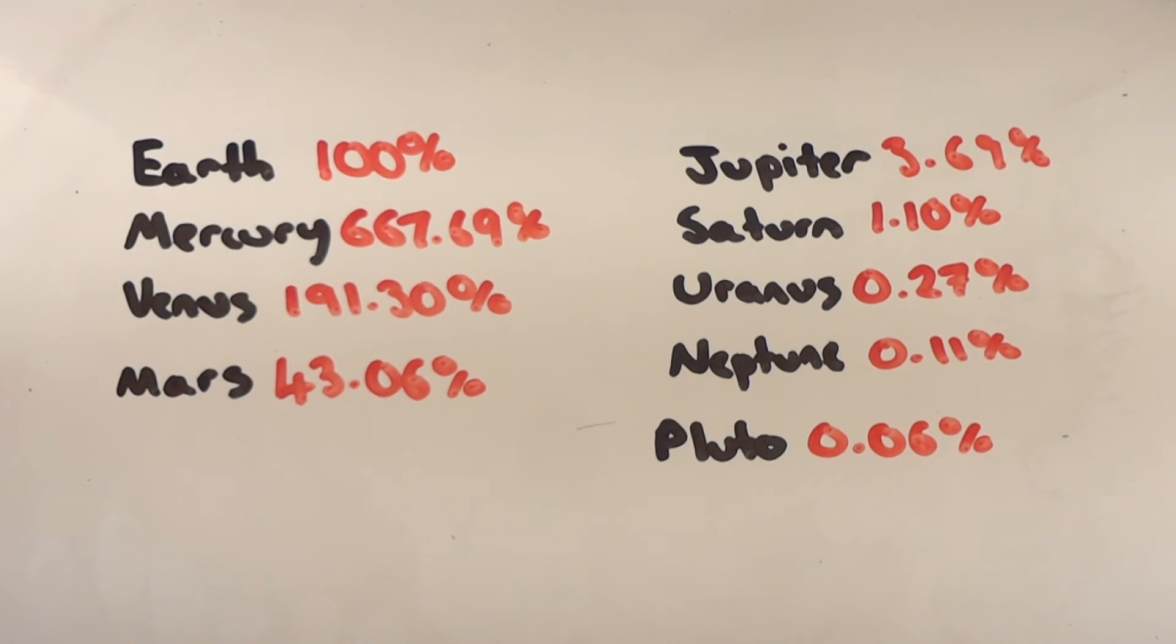Jupiter 3.69%, Saturn 1.10%, Uranus 0.27%, Neptune 0.11%, and Pluto receives a tiny 0.06% compared to Earth, as Pluto is on average 39.746 AU away from the sun.